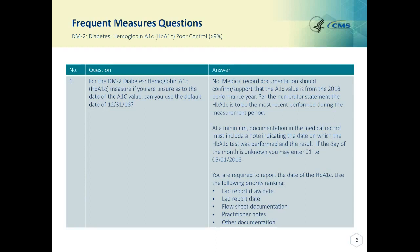You are required to report the date of the HbA1C. In the measure specifications on page 10, under numerator guidance, you can find the priority ranking of the documentation you should use to verify the date of the test. That would be the lab report draw date, the lab report date, the flow sheet documentation, practitioner notes, or other documentation.